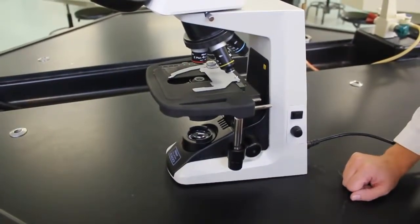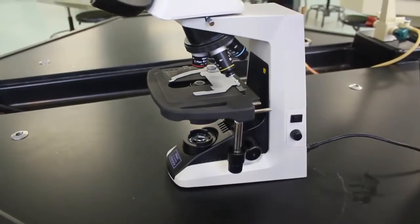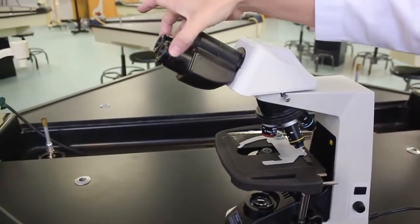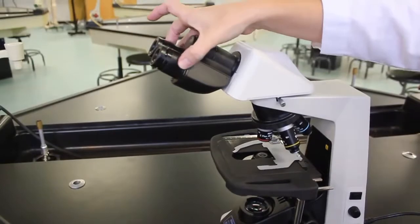To give you a quick overview of our Nikon microscopes, starting at the top, these are the oculars. They are magnified. This is what you will look through.